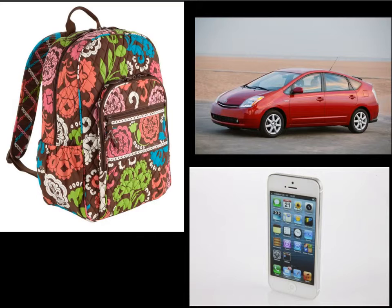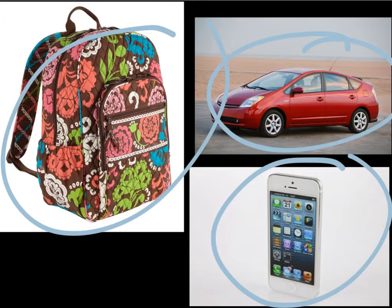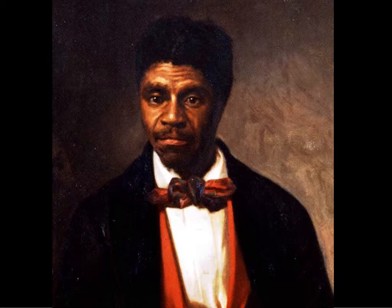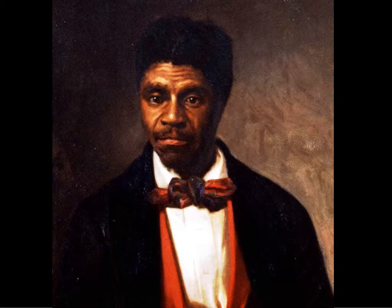When you see a car, an iPhone, or a backpack, you might think these are all things people own — they're all property. That's where this gentleman comes in for our third event, from 1856 to 1857. His name is Dred Scott. This is a famous portrait of him. Dred Scott was a slave, owned by an army doctor who lived in the slave state of Missouri. But Dred Scott's master took him along to free territories — to places like Illinois and Wisconsin. So when Scott came back to Missouri and his master died, he said: I've been in free territories, I should be free. So he actually sued for his own freedom.